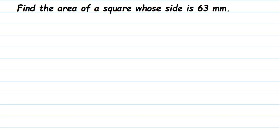Find the area of a square whose side is 63 millimeters. There are two ways to solve this: you can convert millimeters into centimeters, but the question doesn't ask you to convert. If you do convert, your answer will still be correct, or you can just solve using millimeters.